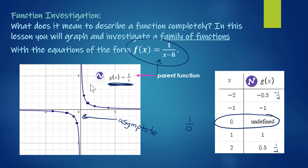We're combining problems 178 and 179 into an overarching lesson rather than focusing on each problem individually. The first task is: make an xy table with integer x-values from five less than your chosen value to five more. We chose h = 7, so our table begins at x = 2 and ends at x = 12. Let's take a look at what the y-values show.